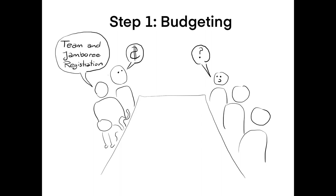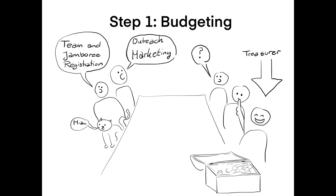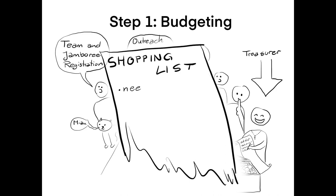Don't forget to include team and Jamboree registration, outreach, and marketing. It is advisable to assign a treasurer, a teammate that will be responsible to record everything that goes in and out of your bank account. Additionally, do a shopping list with materials needed for your experiments.